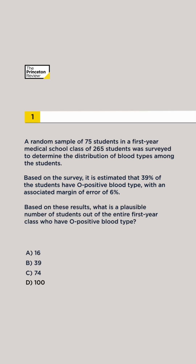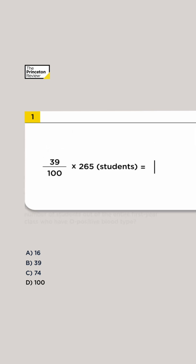The question states that 39% of students in the survey have O positive blood type, so apply this percent to the number of students in the entire first year class: 39 divided by 100 times 265 equals 103.35.